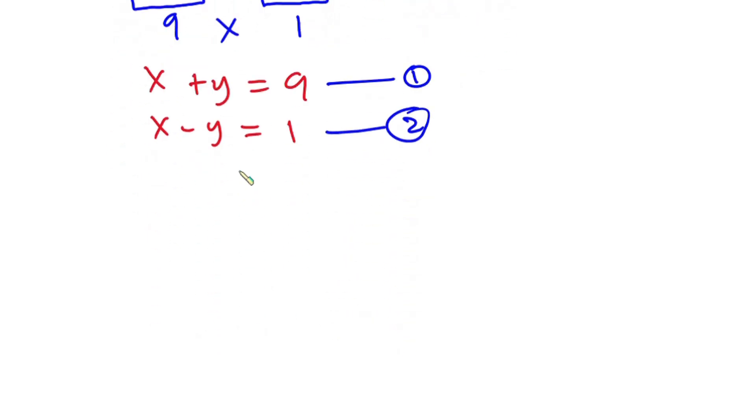Alright, so now we can say that equation 2 plus equation 1. So this is x minus y plus equation 1 which is x plus y and this is equal to 1 plus 9. Okay, so straight away you can see that this negative y will take care of this positive y. Now we are left with x plus x which is 2x and this is equal to 1 plus 9 is nothing but 10.